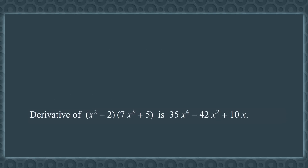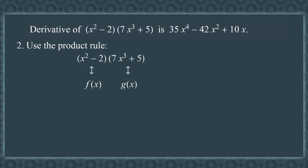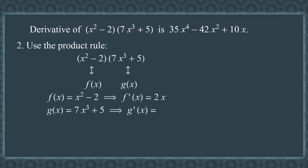Let's find the derivative again, but this time we'll use the product rule. In this example, x² − 2 is f(x), and 7x³ + 5 is g(x). Since f(x) equals x² − 2, the derivative of f equals 2x. And g(x) equals 7x³ + 5, so g′ equals 21x². We now have everything we need to use the product rule.